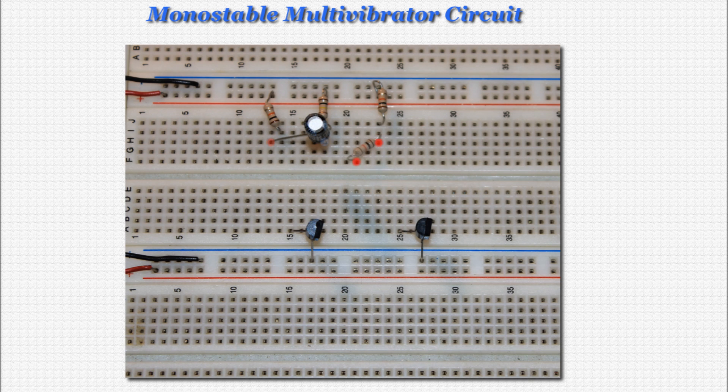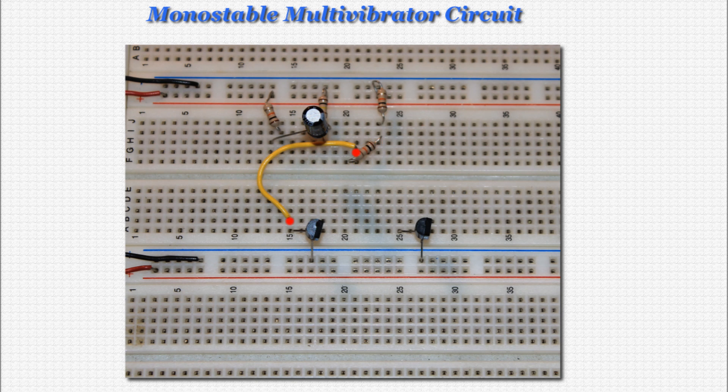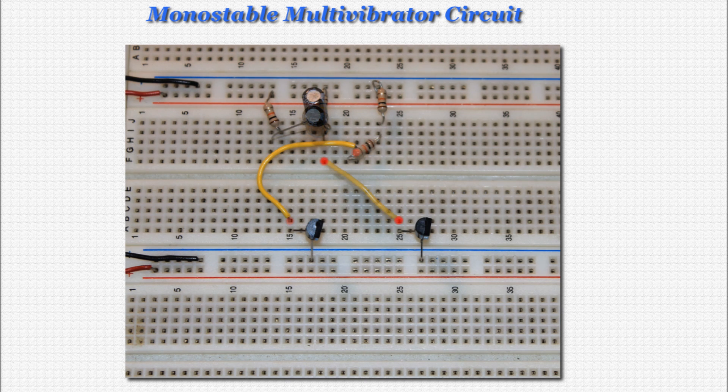Now place a 10k ohm resistor as you see in the photo. Next, we will wire one end of that resistor to the base of the left transistor. And now wire the negative end of the capacitor to the base of the right transistor, as shown on screen.